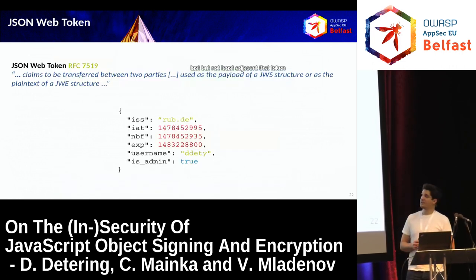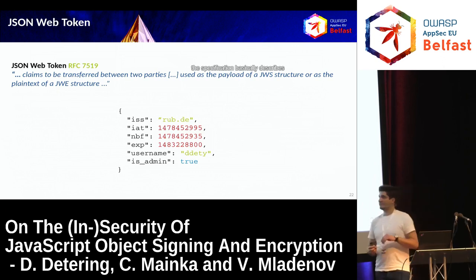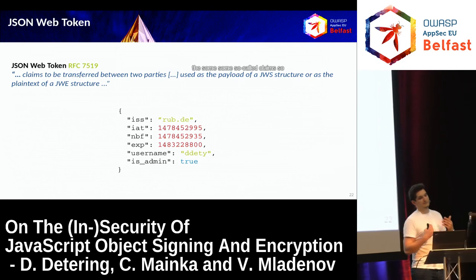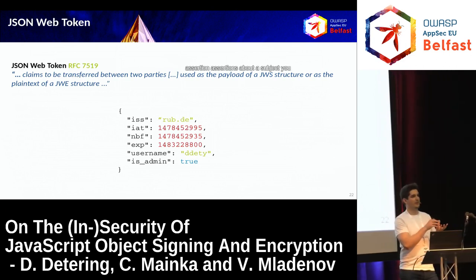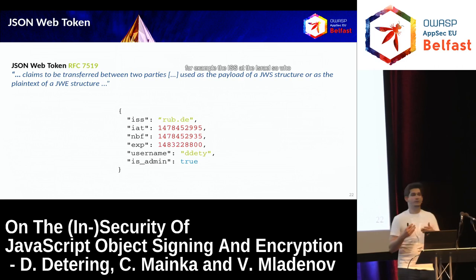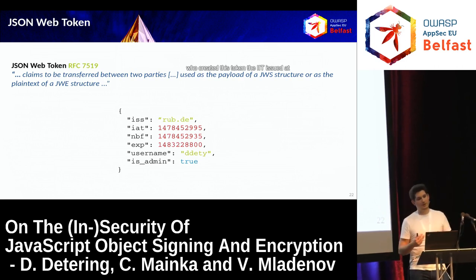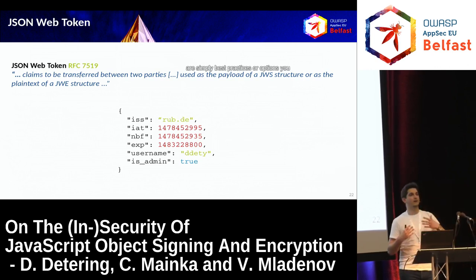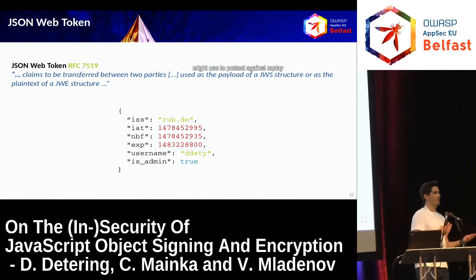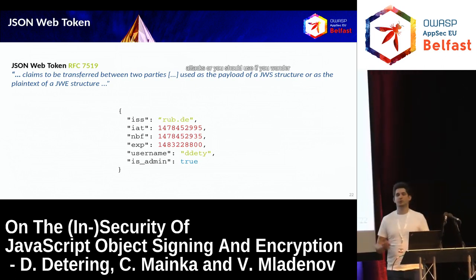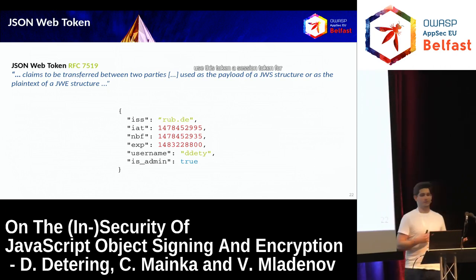Last but not least, the JSON Web Token. This specification basically describes some so-called claims - assertions about a subject you may use but don't have to. For example, ISS is the issuer who created the token, IAT is issued-at, not-valid-before, expiration - these are simply best practices or options you might use to protect against replay attacks, or should use if you want to use this token as a session token.